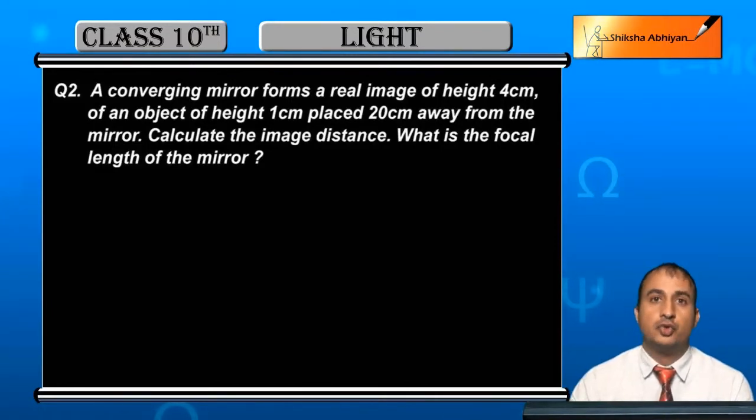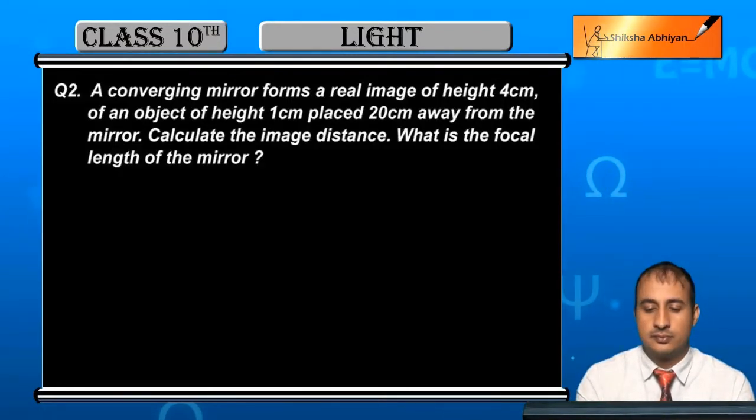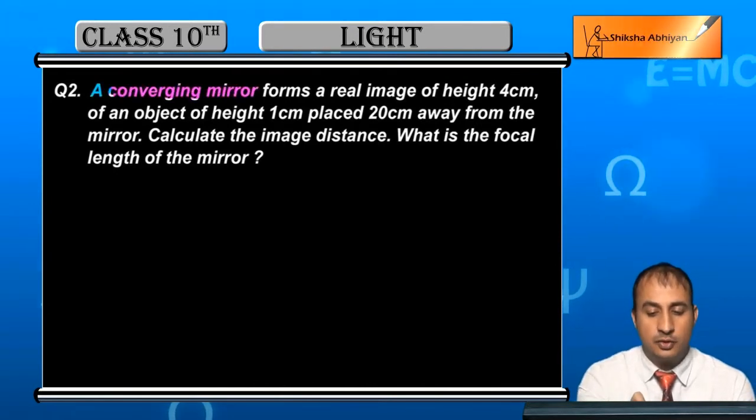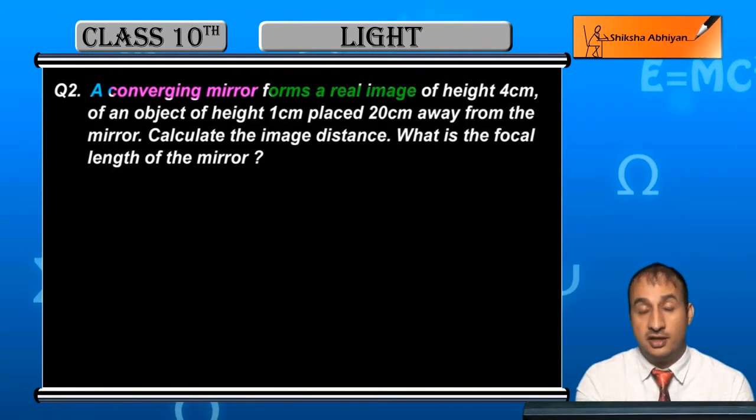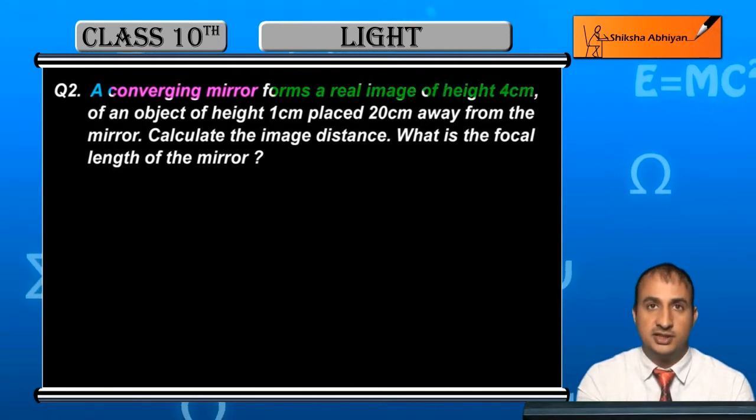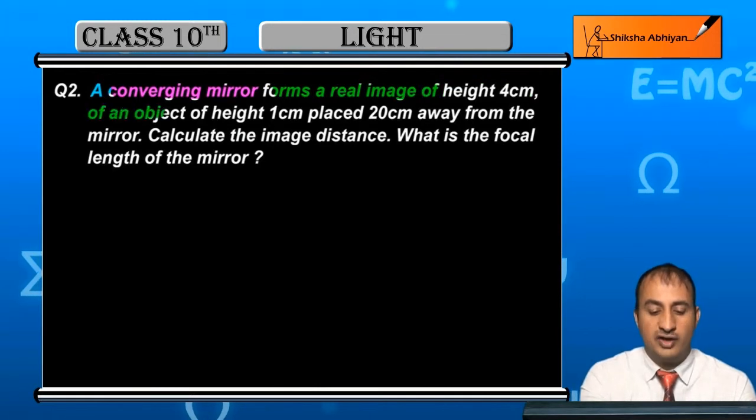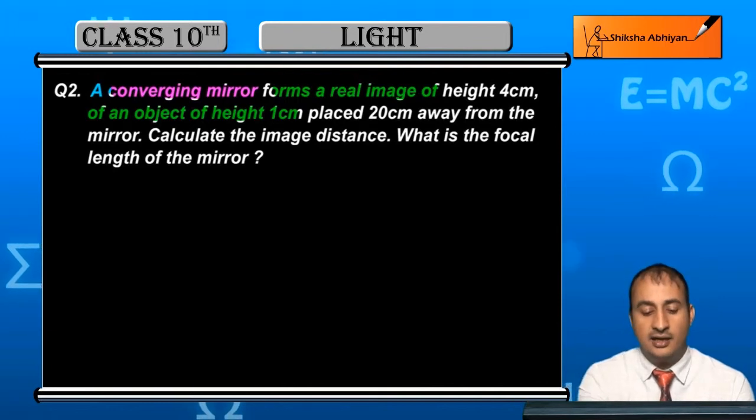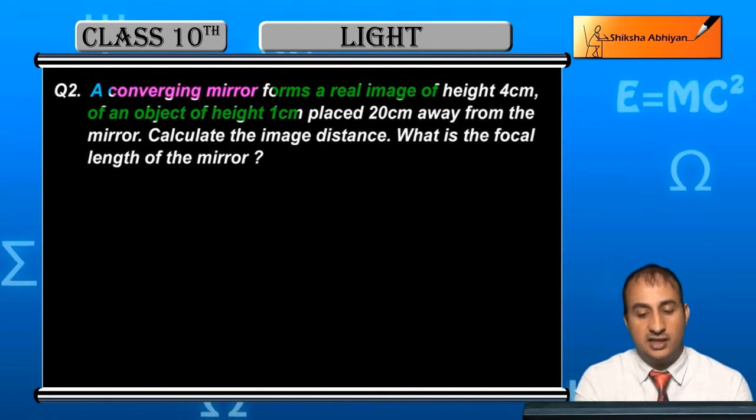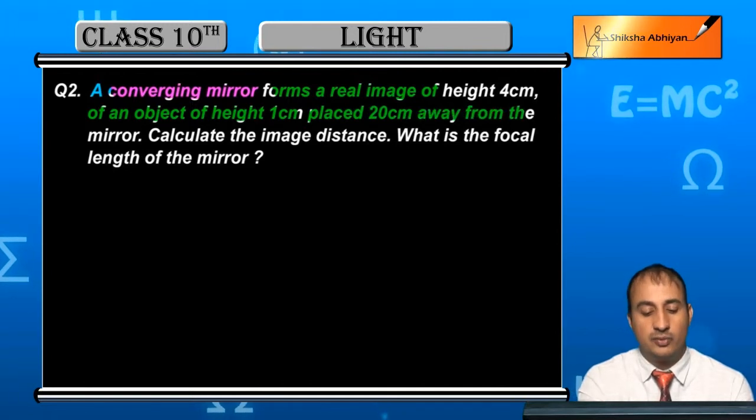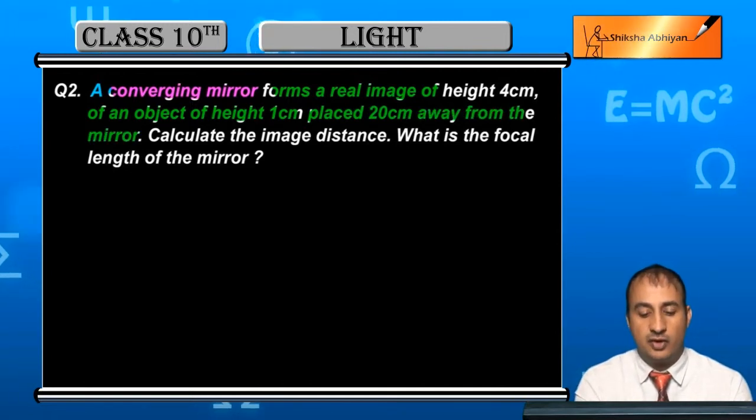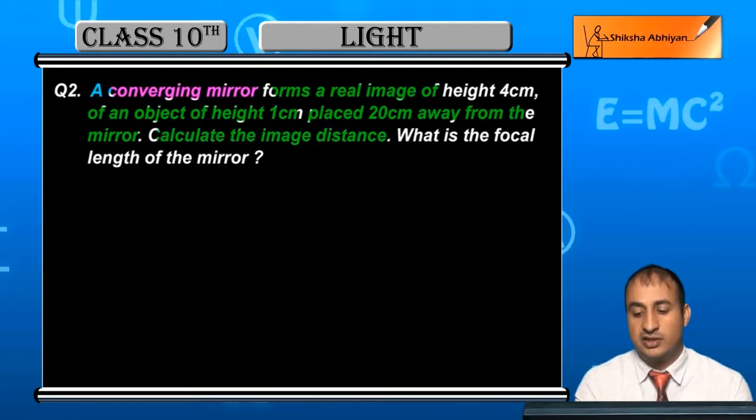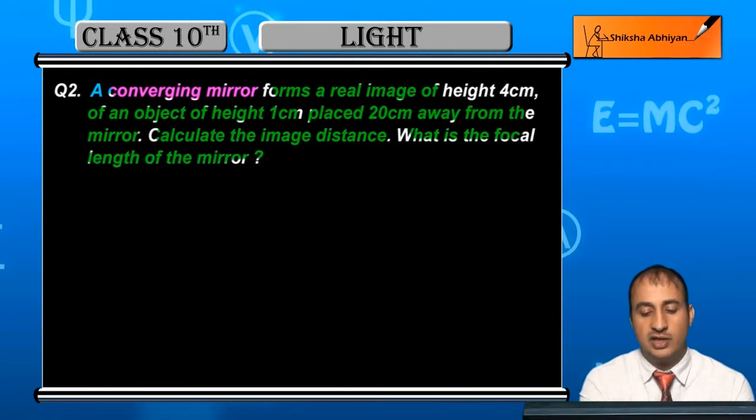Now students, see the second question. A converging mirror forms a real image of height 4 cm of an object of height 1 cm placed 20 cm away from the mirror. Calculate the image distance. What is the focal length of the mirror?